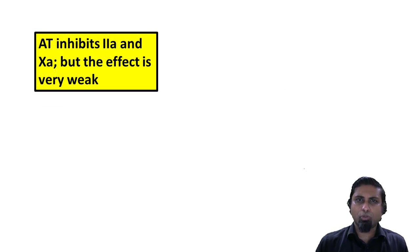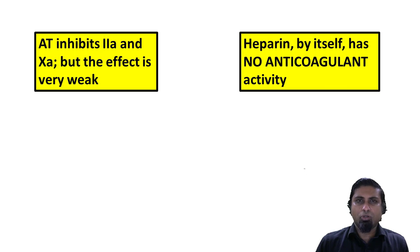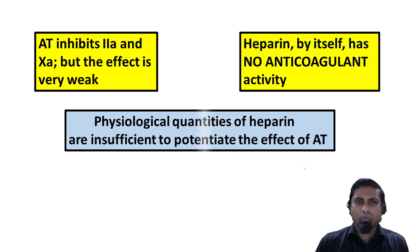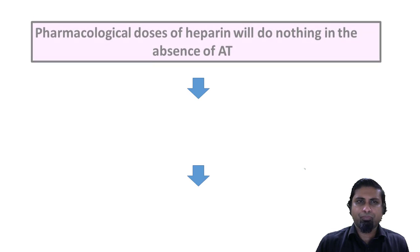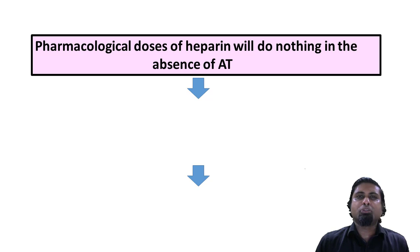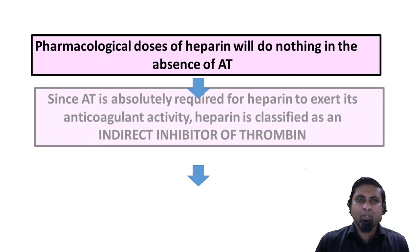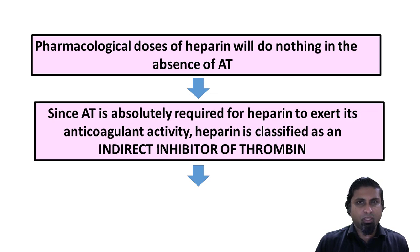Antithrombin inhibits factor 2a and 10a, but this effect is very weak. Heparin by itself has no anticoagulant activity, and physiological quantities of heparin are insufficient to potentiate the effect of antithrombin. However, when we combine pharmacological doses of heparin with antithrombin, the effect of endogenous antithrombin is greatly potentiated. Pharmacological doses of heparin will do nothing in the absence of antithrombin.